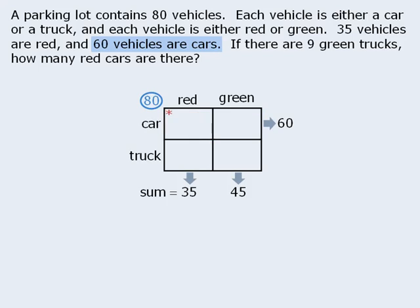Now if there are 80 vehicles in the parking lot, and 60 of them are cars, then the remaining 20 vehicles must be trucks. So the sum of these two boxes must be 20. At this point we don't have any information about the number of vehicles to be placed in each of our four individual boxes. We only know the sums of the boxes in each row and each column. To fill in each box, we need a seed. And here it is.